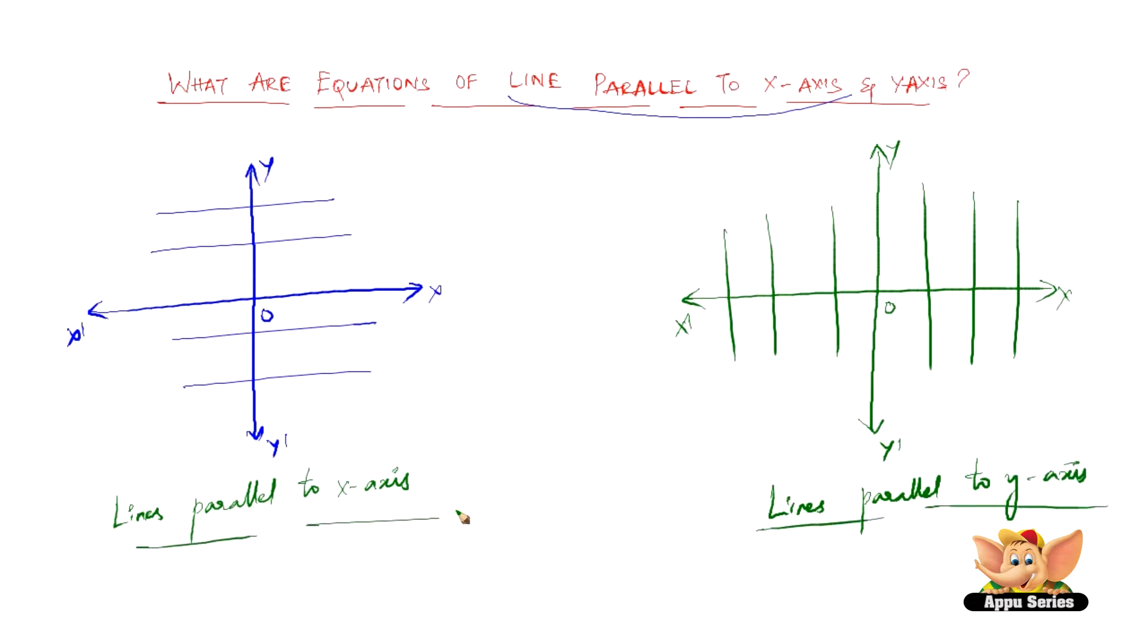But when does it exactly happen that way? Let us see that. If you notice carefully, considering this particular line, the distance of this line from the x-axis at all points is equal. That means there is only one value for the y-coordinate - everywhere it's the same point.